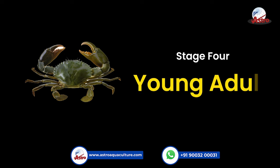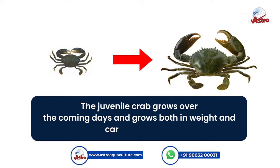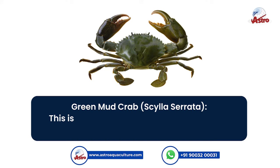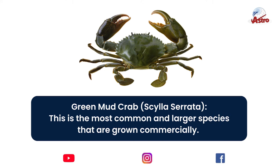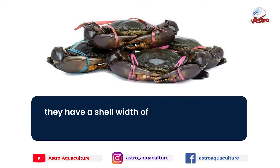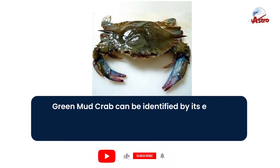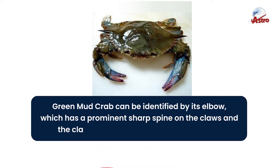Stage 4: Young Adult. The juvenile crab grows over the coming days, increasing both in weight and carapace width. Green Mud Crab is the most common and larger species grown commercially. They have a shell width of 20 to 25cm and grow over 2 to 2.5kg in weight. Green mud crab can be identified by its elbow, which has a prominent sharp spine on the claws, and the claws are dark green to purple colored.